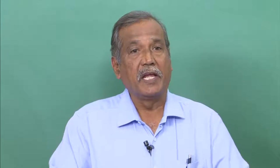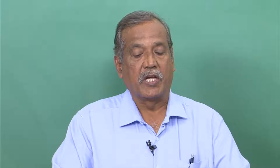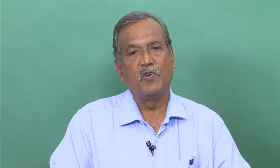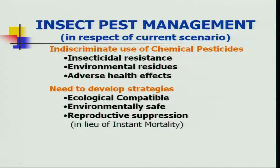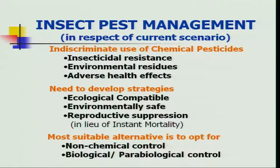These technologies need to be developed keeping in mind their ecological compatibility, environmental safety, and if any technology has an influence on reproductive suppression, that is a welcome issue. Lastly, keeping all these things in mind, one needs a suitable alternative which should be a non-chemical means — and if it is biological, that is most accepted, or at least it should be para-biological in nature.